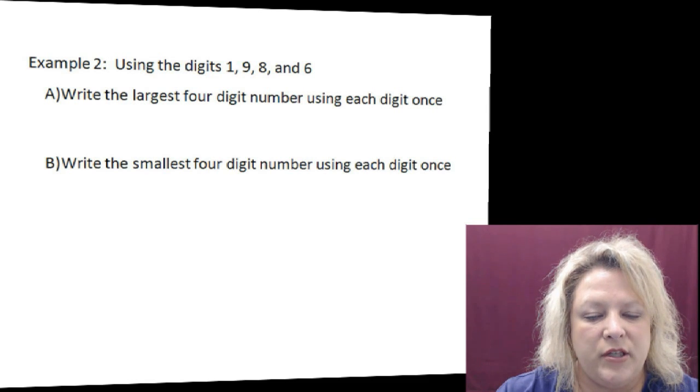And then to make the smallest four digit number, you would do the opposite and put it from the smallest to the largest. So that would be one thousand, six hundred, eighty nine.